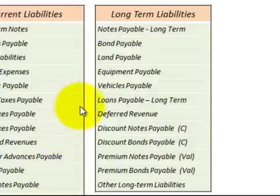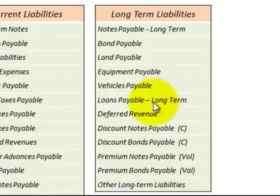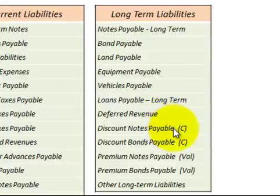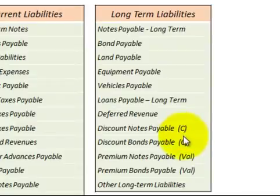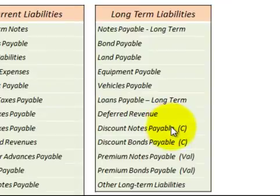Now let's move up to long-term liabilities. You need to understand what deferred revenue is. Coming down here to these accounts with the little 'c' behind them — those are contra accounts. They work opposite to the normal account that they're representing.